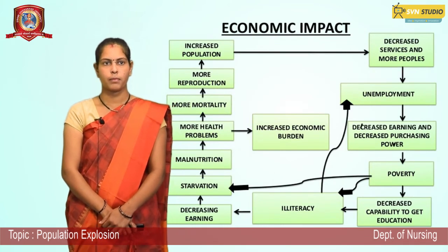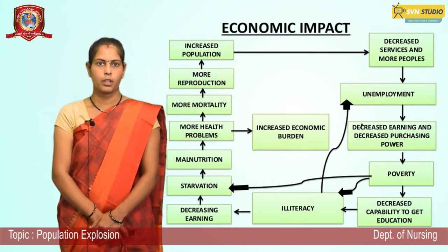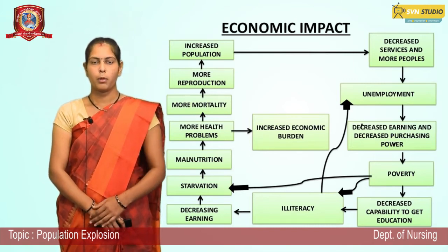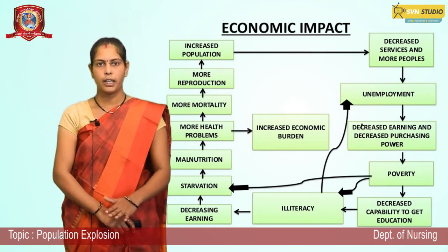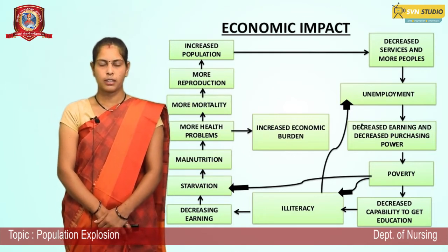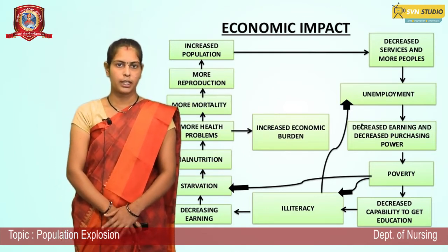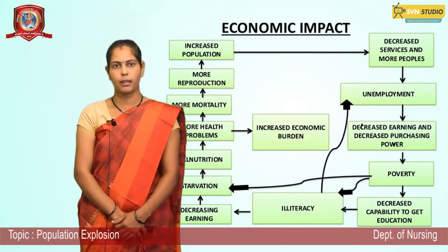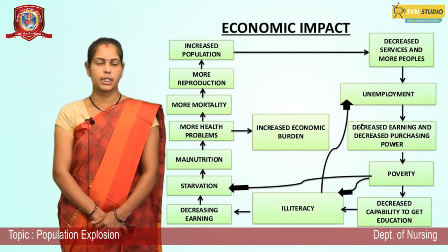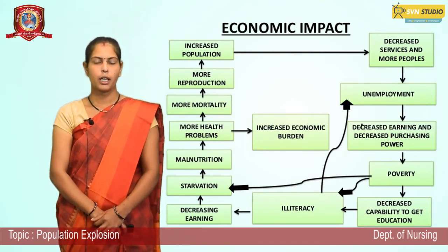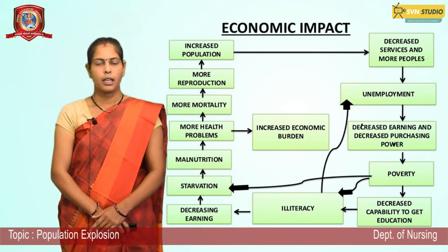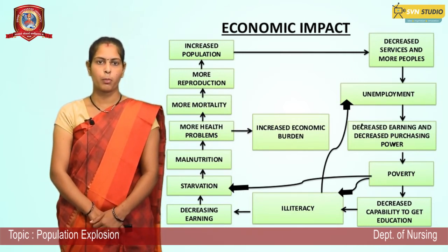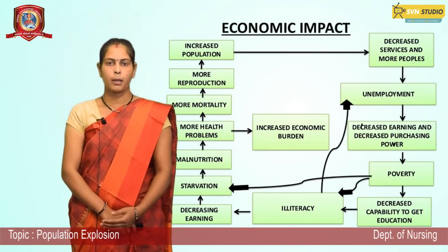Economic impact: Increased population leads to decreased services and more competition for jobs. Population has increased so much that every person cannot get a job, causing the employment level to decrease. Unemployment leads to decreased earnings and decreased purchasing power. Because of unemployment, we cannot buy everything. Poverty is because of unemployment.